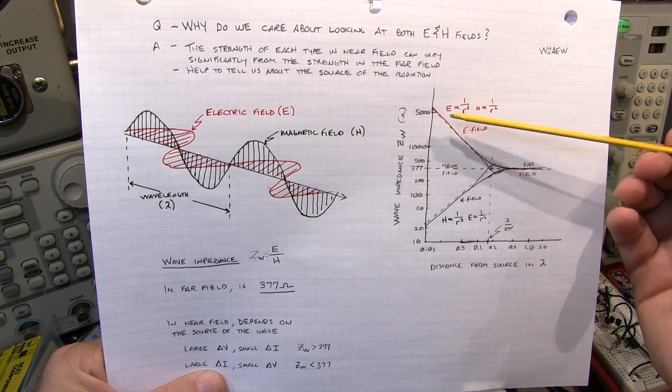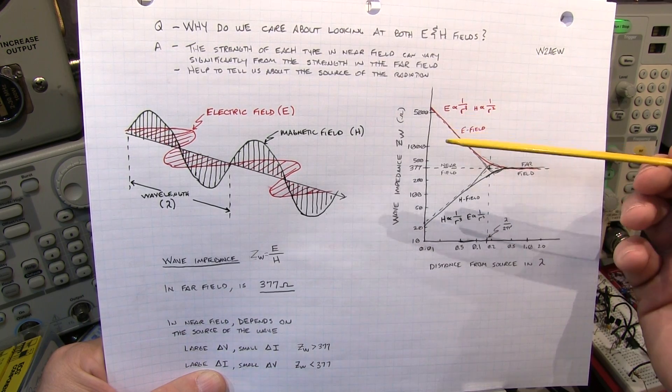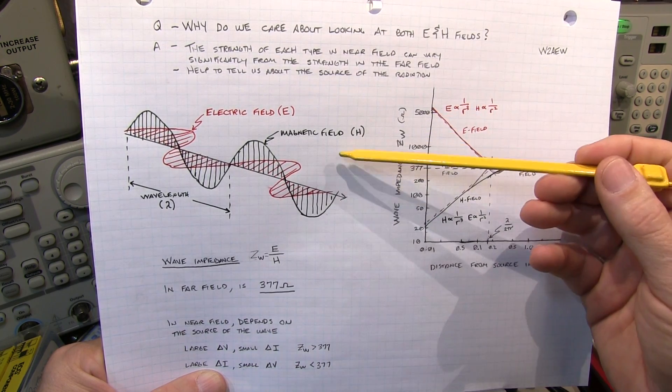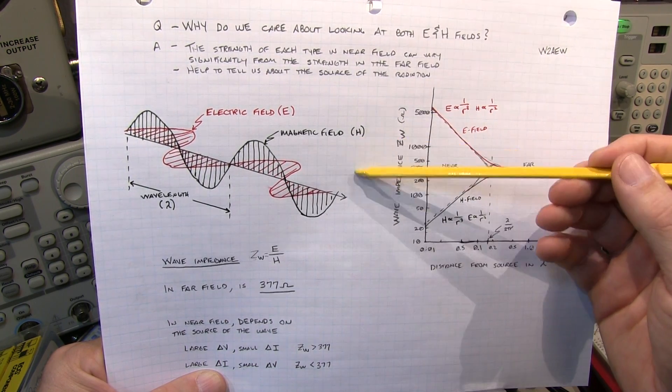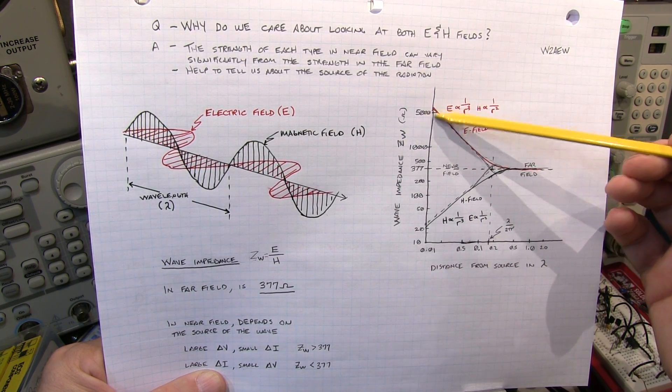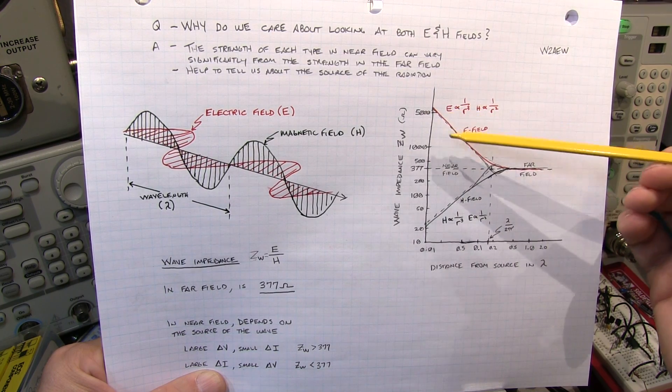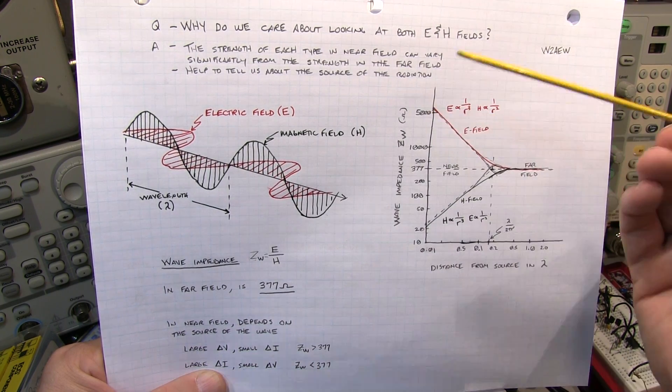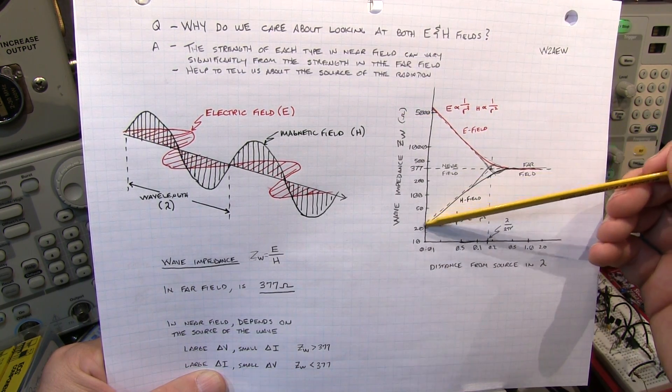So when you're making measurements in the near field, if you had a voltage source, maybe it was two logic chips sitting next to each other, swinging five volts back and forth between them but with very little current, that might be a relatively large voltage change with very little current. That would give me a large E field, but very little H field.